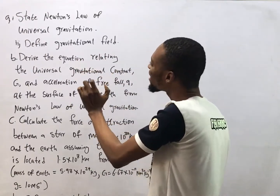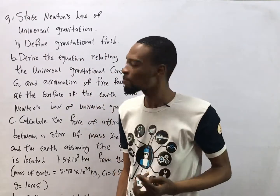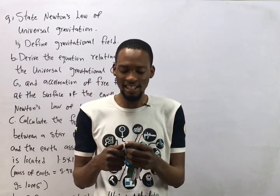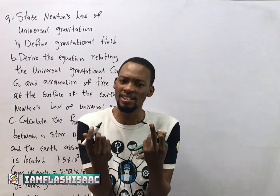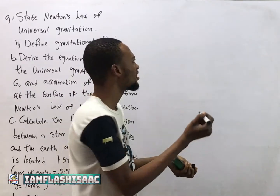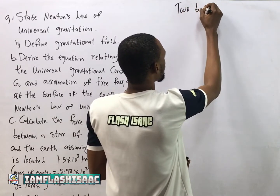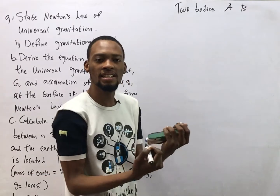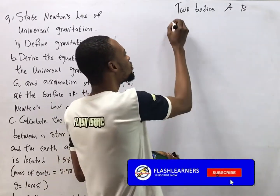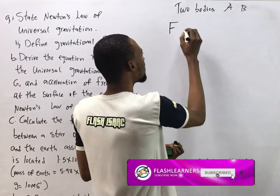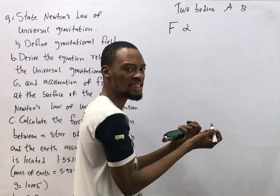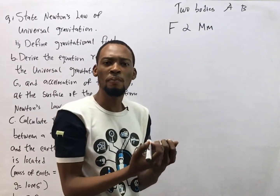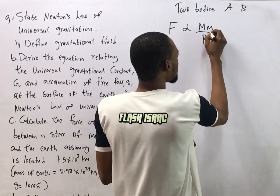The first question says: state Newton's Law of Universal Gravitation. Newton's Law of Universal Gravitation states that any two bodies in the universe — say body A and body B — are attracted to each other with a force that is directly proportional to the product of their masses and inversely proportional to the square of their distance.